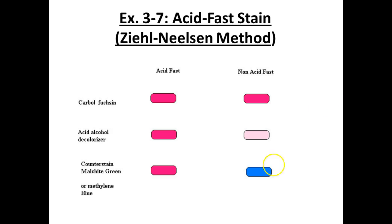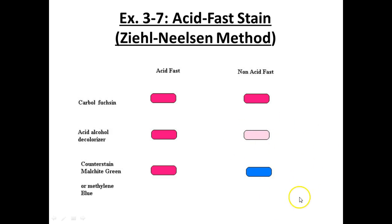When we do the procedure, the acid fast organisms are going to stay stained with the carbolfuchsin. The counterstain is going to make no difference for them — it's not going to stain them. For our non-acid-fast organisms, we're going to stain them with carbolfuchsin but decolorize with acid alcohol. They're going to become clear. In order to see them, we use methylene blue because we're using the Ziehl-Neelsen method. They'll be a bluish-gray color, and they're going to not look very pretty because they get highly damaged by that acid alcohol.